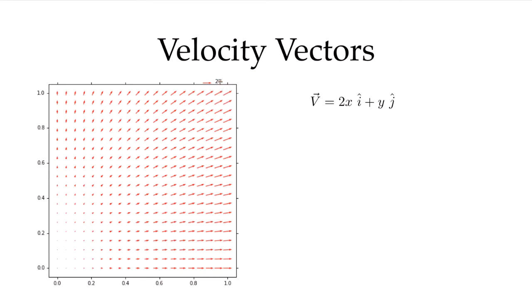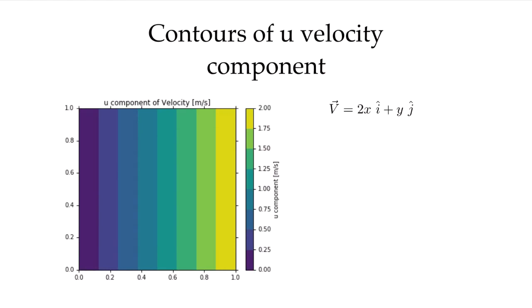Let's look at another way we could visualize that. We could plot contour plots of the individual components. Here's the u component — the component of velocity in the x direction, plotting the function 2x over my domain. We've colored it by the magnitude of that component alone. When x is equal to 0, the velocity is 0, as expected. And when x is equal to 1, we get a value of 2 at this face.